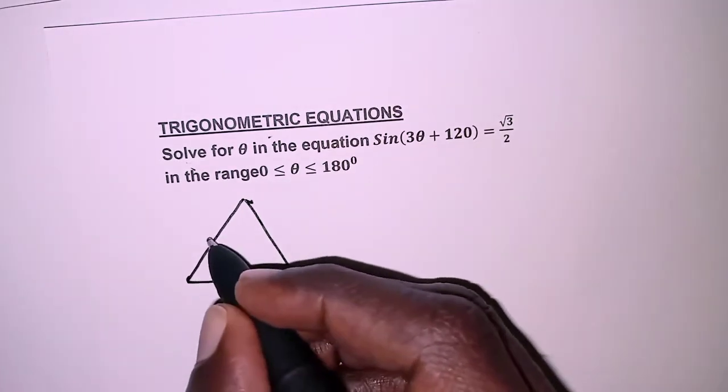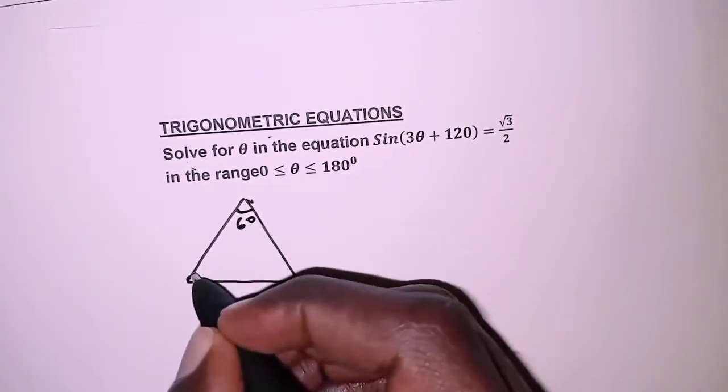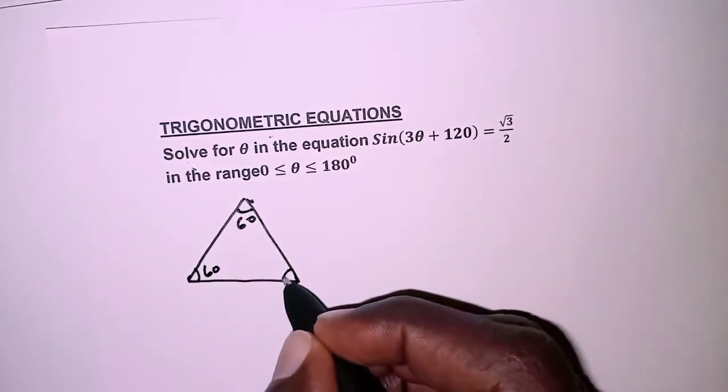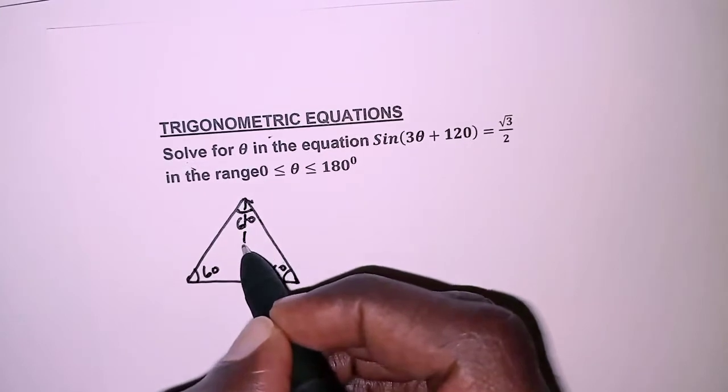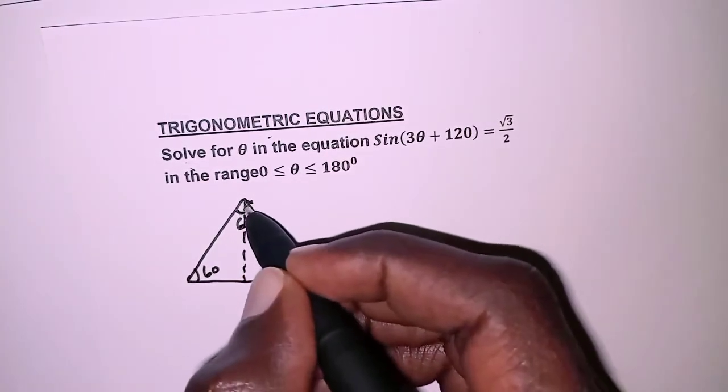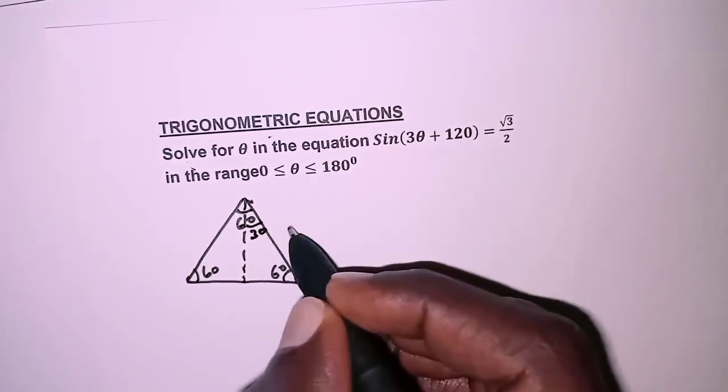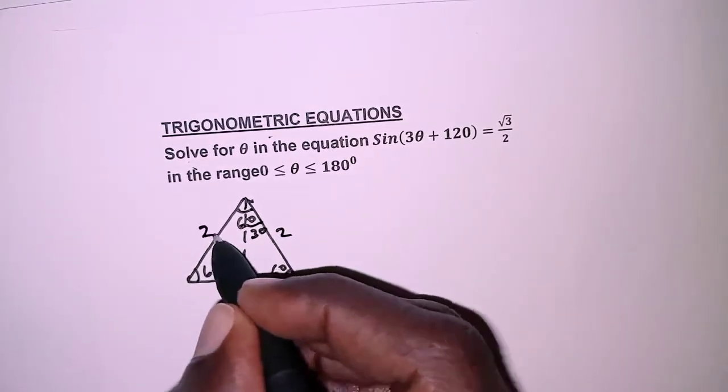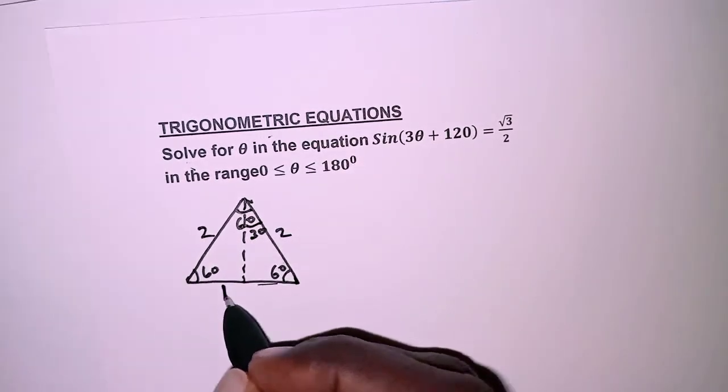We take an equilateral triangle with angles 60°, 60°, and 60°. Then we have this perpendicular bisector of the base which also bisects the 60° angle at the top, so up here we have 30°. If here is 2, 2, and the base is also 2, then this part is 1 and 1.